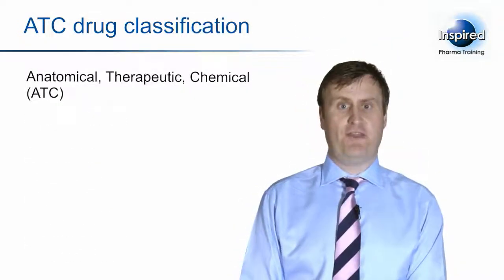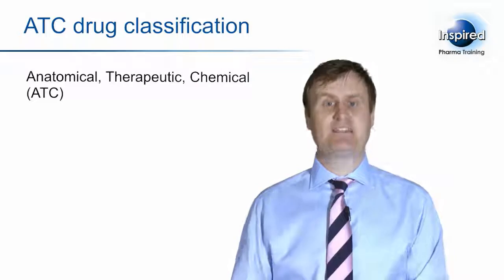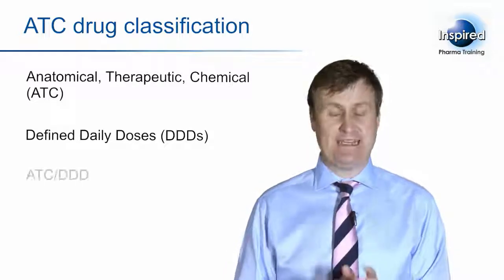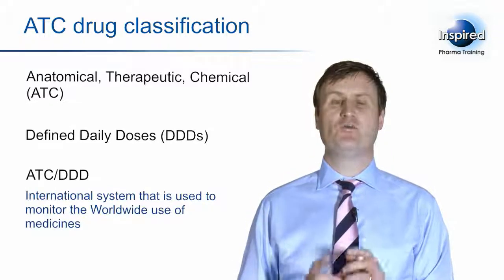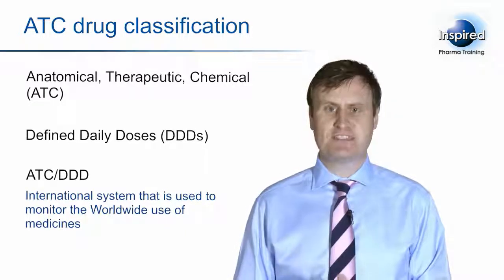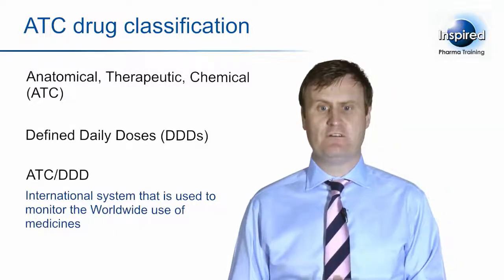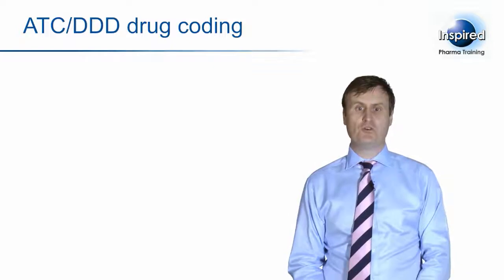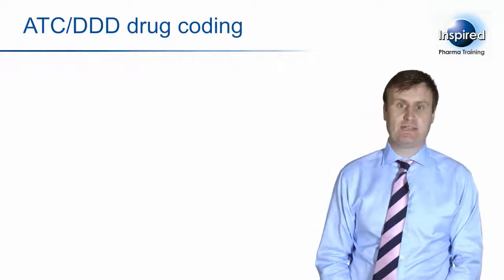The Anatomical Therapeutic Chemical, or ATC, classification system, together with Defined Daily Dose, or DDD — in short, ATC/DDD — is an international system used to monitor the worldwide use of medicines. The system provides a global standard for classifying all medicines and medicinal substances, and serves as a tool for drug utilization research. Drugs are classified into different groups according to the organ or system on which they act, and their therapeutic and chemical characteristics.